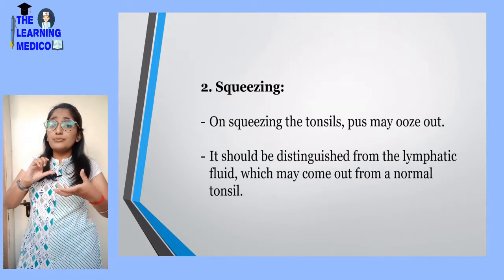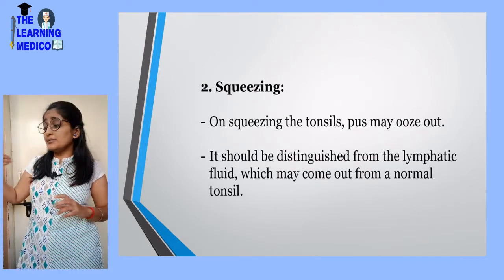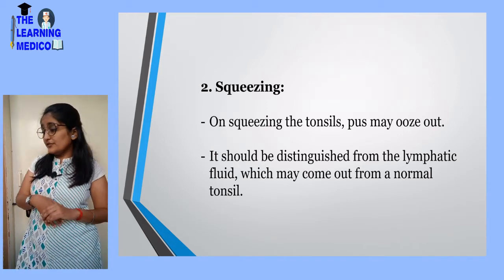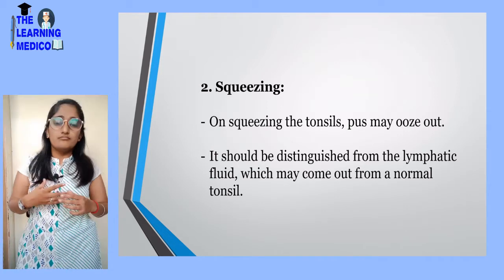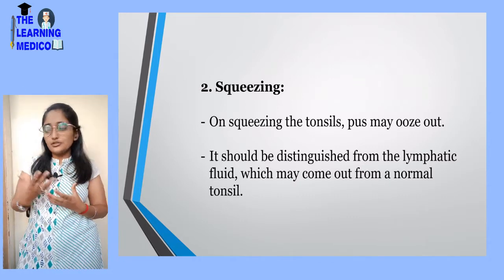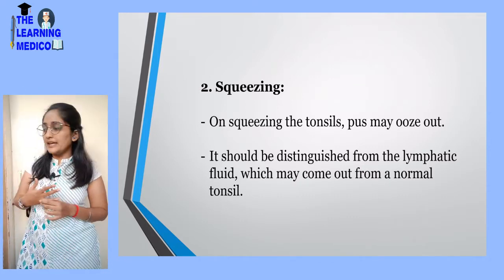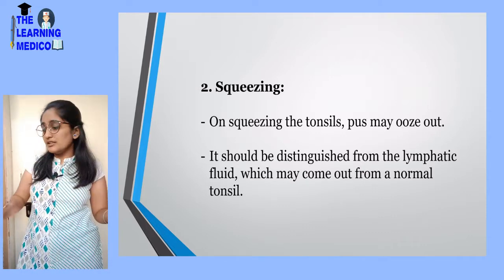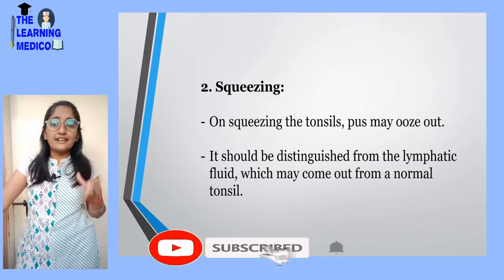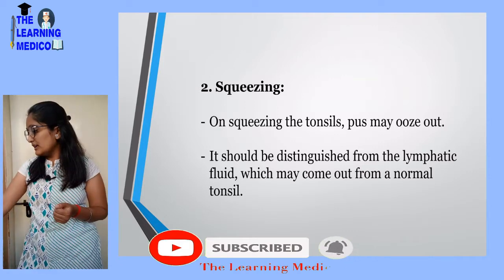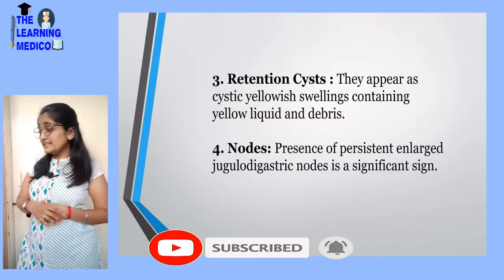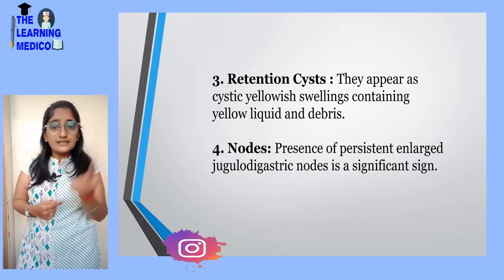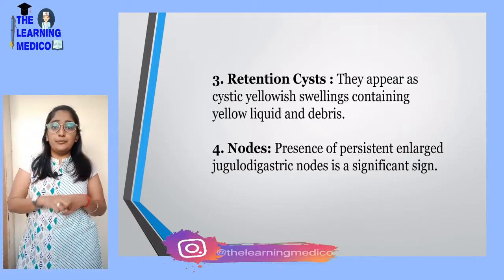When the tonsil is squeezed, it expresses pus. This must be distinguished from lymphatic fluid, which can also come out normally — so we need to identify which is pus and which is lymphatic fluid. Next is the retention cyst, which appears as a cystic yellow swelling containing yellow fluid, forming cysts with debris.